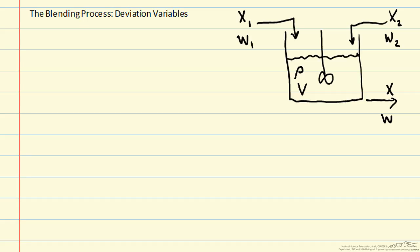Here we'll consider the blending process and describe deviation variables. It's often desired to operate a process at a constant steady state, but sometimes there are deviations that happen.